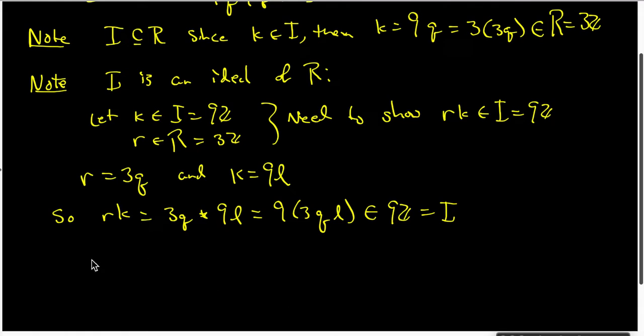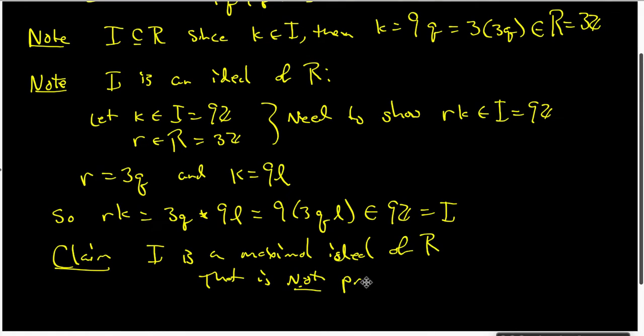Now, what I need to do is tell you that the claim is I is a maximal ideal of ring R that is not a prime ideal of R. And so we have to prove both claims. So let's look at them one at a time.